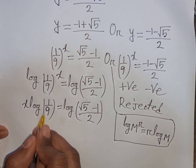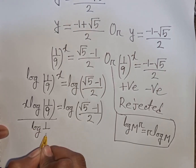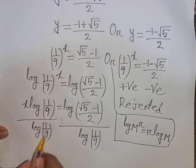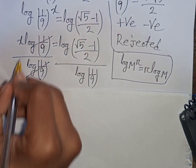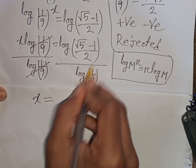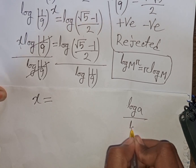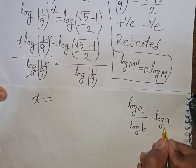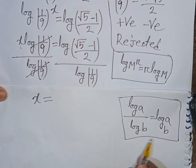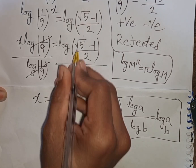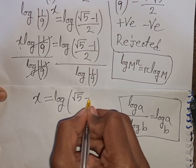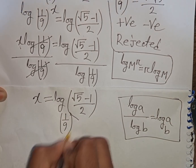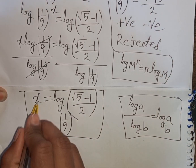To find x, divide both sides by log(1/9). Applying the formula log(a)/log(b) = log_b(a), we get x = log base (1/9) of [(√5 − 1)/2]. This is our final answer for x.